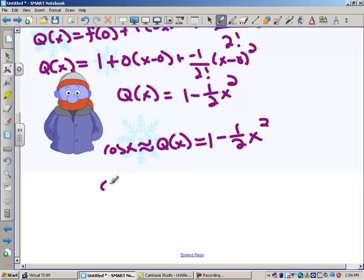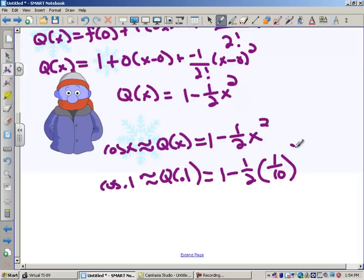So the cosine of 0.1 would be approximately equal to the quadratic approximation at 0.1, which is 1 minus 1 half times 0.1, which is 1 tenth, squared, which is 1 minus 1 half times 1 one hundredth, which is 1 minus 1 over 200.